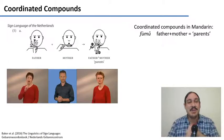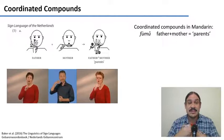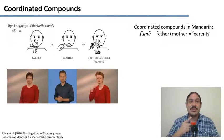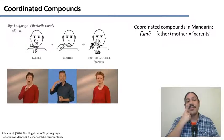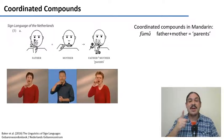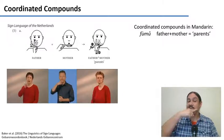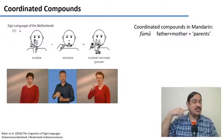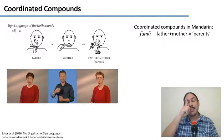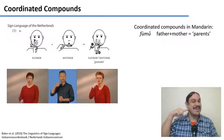Let's start with compounds. These are words in the sign language of the Netherlands. The first one is 'father': contact of the cheek, downward motion. The second one is 'mother': extended finger, contact on the chin, sideways motion. The third one is 'parents': first one and then the other.